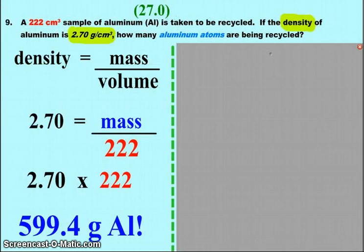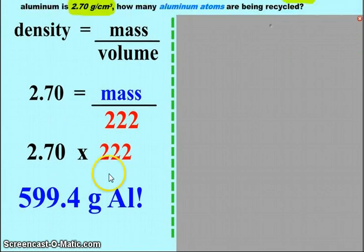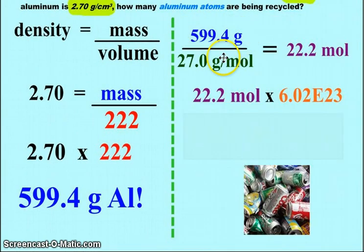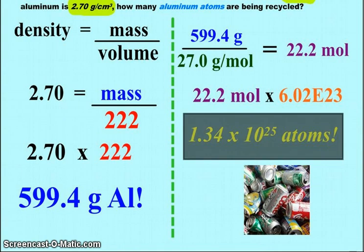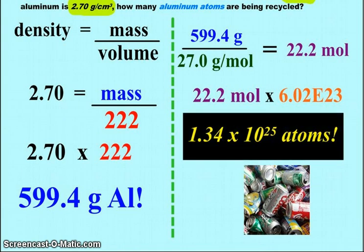Question nine is our density tie-in. So here we have a sample of aluminum being recycled. The density of aluminum is 2.70 grams per centimeter cubed. So how many aluminum atoms is that being recycled? Well, the density is mass over volume. So to find mass, it is density times volume. So the 2.7 times the 222. That tells us we've got 599.4 grams of aluminum being recycled. We will need aluminum's molar mass, 27.0, from the periodic table. So now that we have those pieces of information, I take the grams of aluminum divided by its molar mass, takes me to Moleville, multiply by Avogadro, and I figured out 1.34 times 10 to the 25th atoms of aluminum are being recycled.